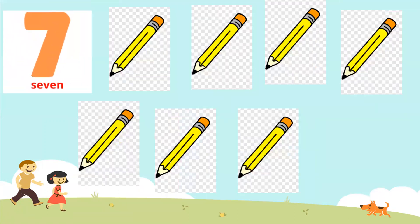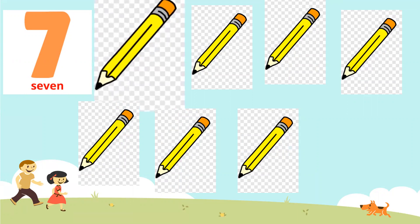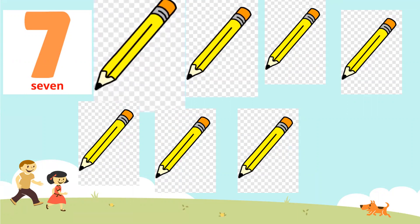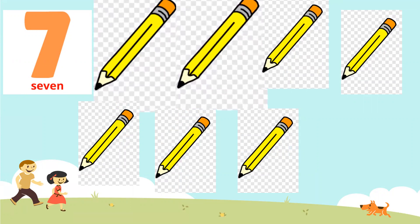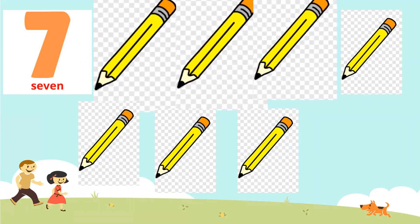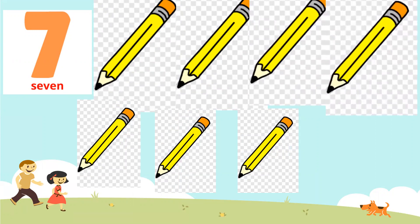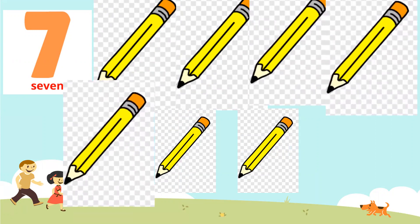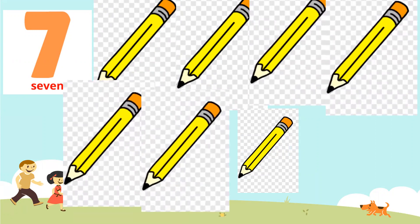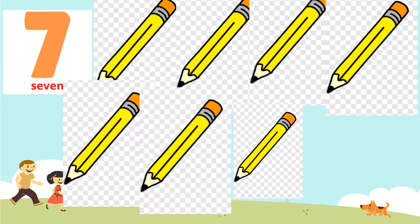Seven. S-E-V-E-E-N-7. How many pencils are there? Let's count. One. Two. Three. Four. Five. Six. Seven.